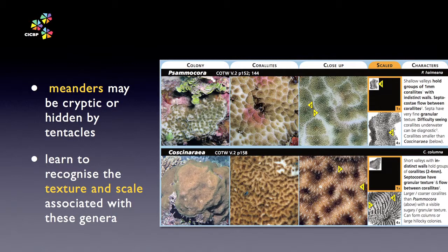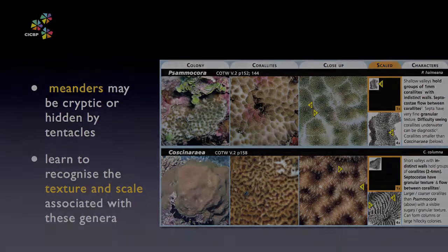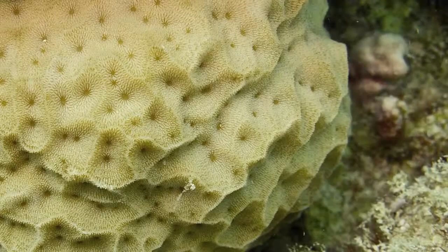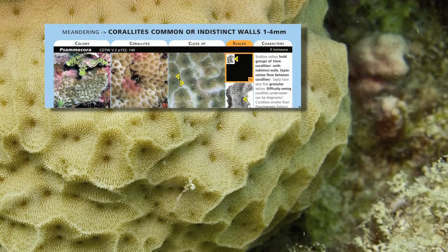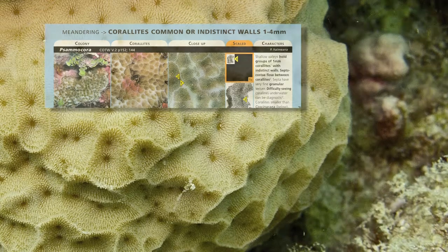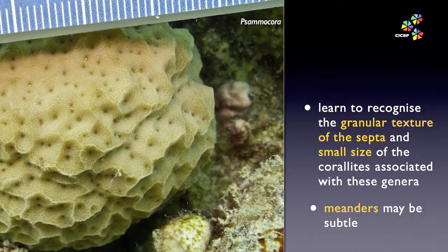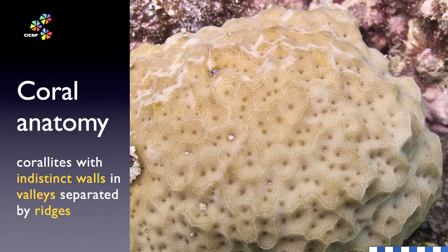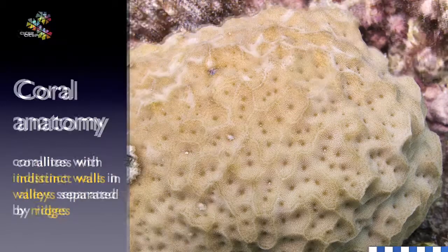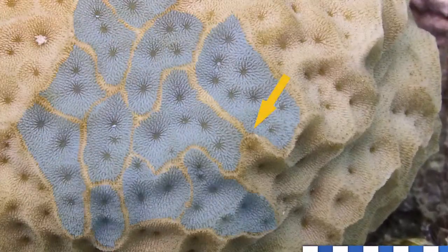Sometimes the polyp tissues or tentacles can obscure the detail you need to see. There are only a few genera that have coralites as small as this Samachora. Check the scale again. Texture combined with scale can be very informative. Note how subtle the meanders are in this coral — learn to recognise the look.